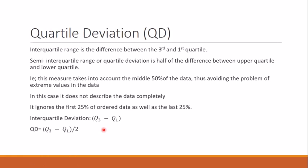Quartile deviation, denoted by Qd, is defined as Qd = (Q3 minus Q1) divided by 2.